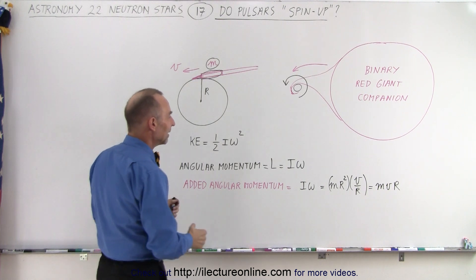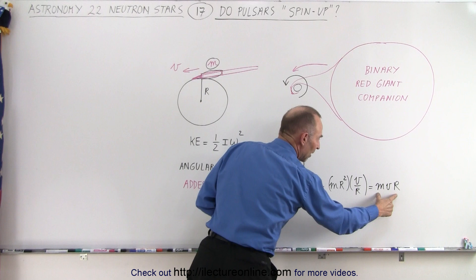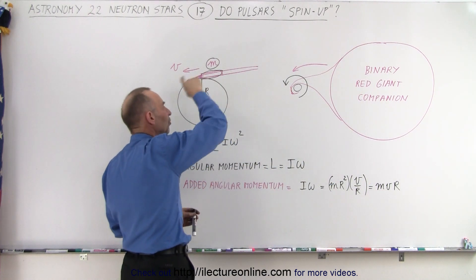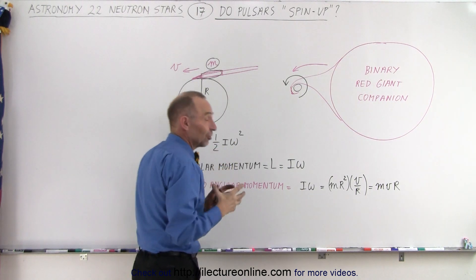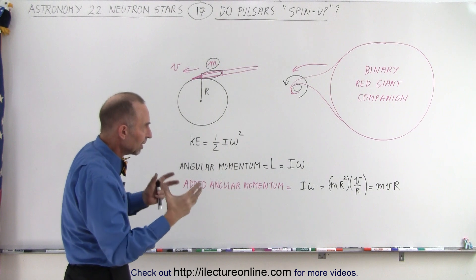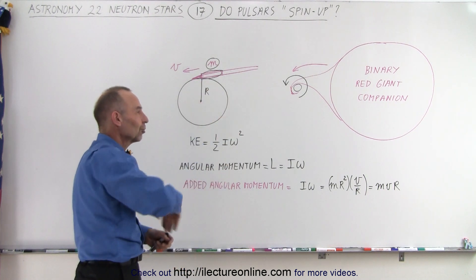And so if we then take the original angular momentum and then we add the deposited angular momentum and vr, the material that goes on there, you can see that slowly the pulsar will begin to spin faster and faster and faster. So even though it's emitting energy and slowing down from the energy that's emitted, it will pick up speed because the deposited material causes it to go faster.